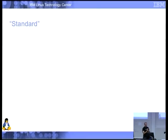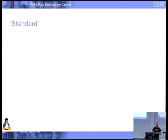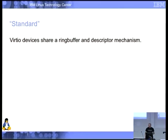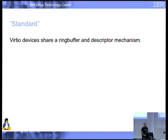Standard — well, obviously if you're writing a standard you want it to be standard. When you look at what people have done in this space before, they considered only how they'd implement it on their hypervisor and expected every operating system to implement their crazy idea. They also tended to use different mechanisms for block, network, and console devices. VirtIO devices actually share a ring buffer and descriptor mechanism — that's standard, whether it's a network device or a GL virtualization thing or whatever.